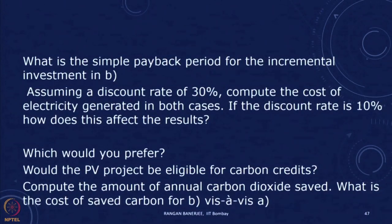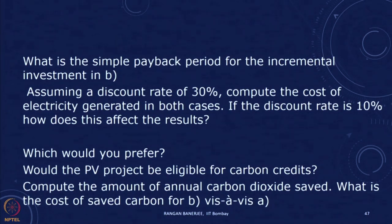The O&M cost for the PV system has no fuel component since solar insolation is free. The O&M cost is 25 paise per kilowatt hour — slightly lower than the non-fuel O&M for diesel. The questions asked are: calculate the simple payback period for the incremental investment in B; using a discount rate of 30%, compute the cost of electricity generated in both cases; which would be preferred; would the PV project be eligible for carbon credits; compute annual CO₂ saved; calculate the cost of saved carbon for B compared to A; and how do results change if the discount rate is 10%?